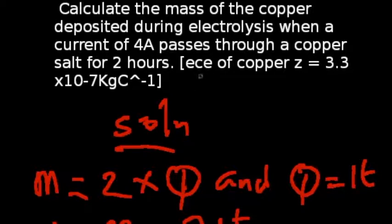Our ECE, that is electrochemical equivalence, is equal to 3.3 times 10 raised to the power minus 7 kg per coulomb. For us to solve this problem,